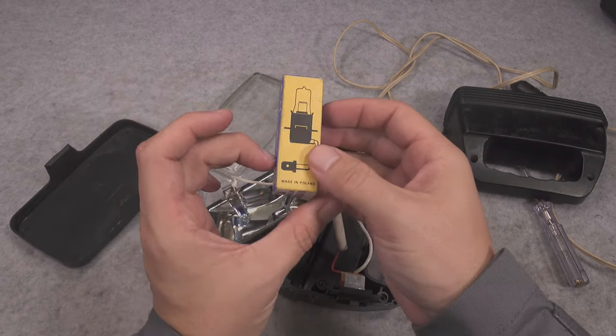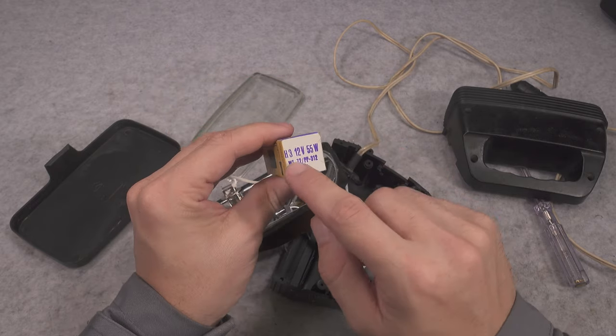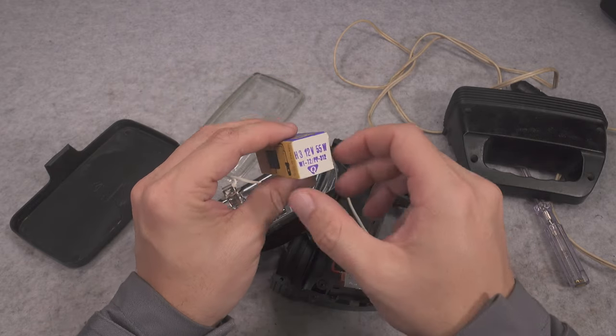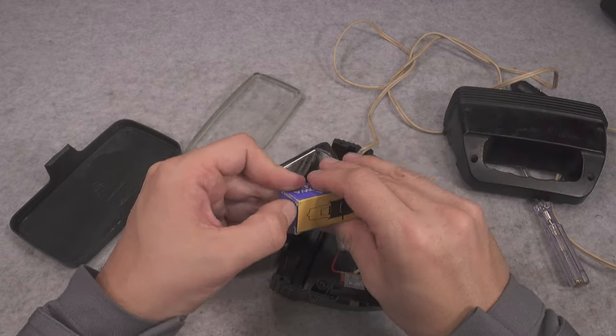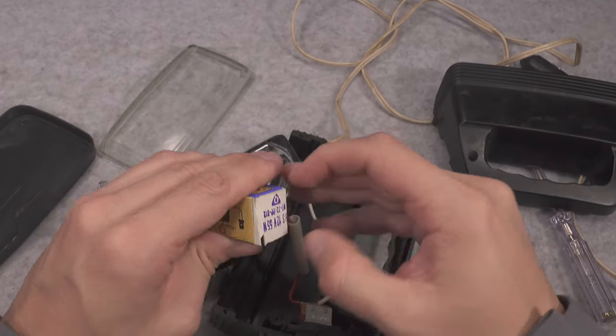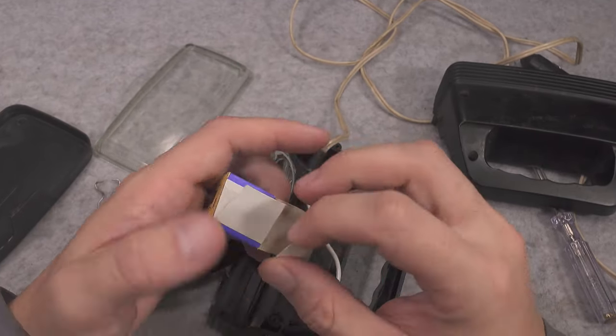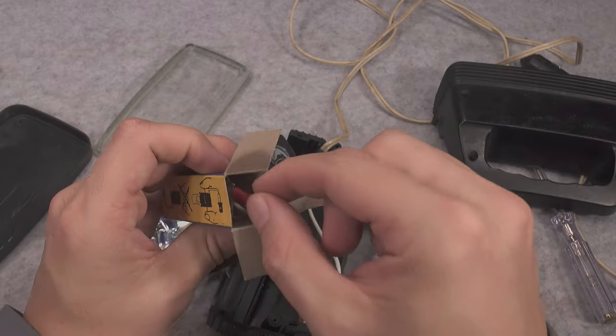And just take a look at what I managed to find: a new old stock vintage made in Poland H3, 12 volt 55 watts. This is vintage stuff you could collect, and of course we've got information that we should not handle it by the glass because it can crack.